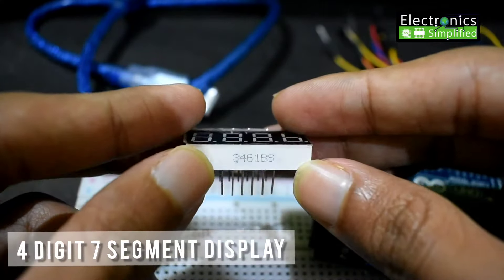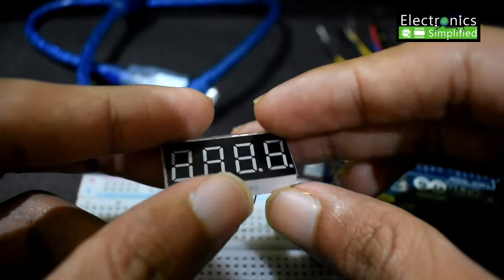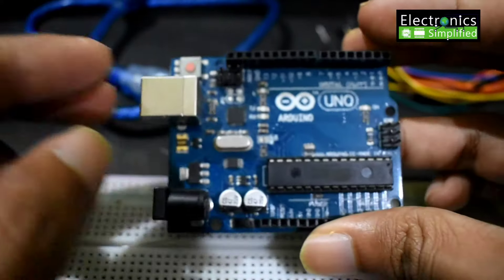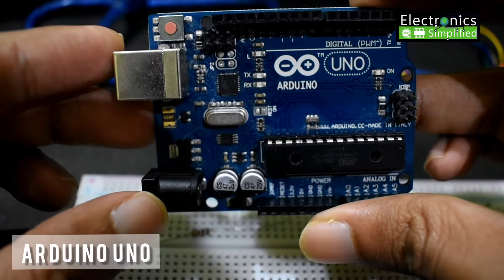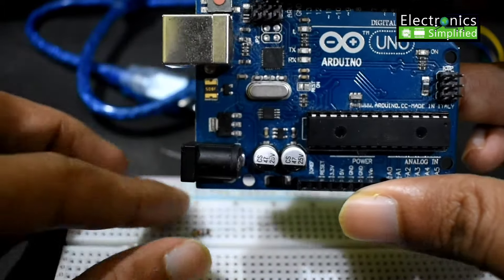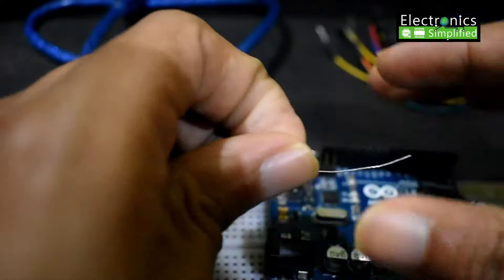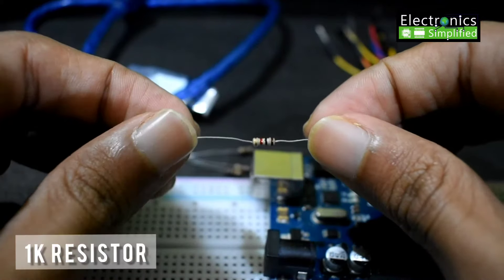And have a look at this. There's a label set to it. So I will talk about this later when we are connecting the circuit. Now the other component that we need is obviously the Arduino Uno itself. And we need resistors, 1K resistors with a quantity of 4.